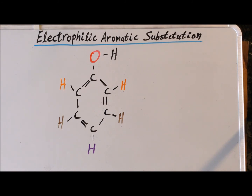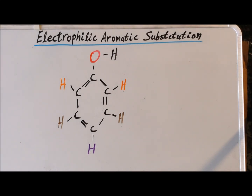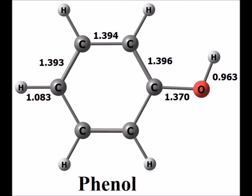Our third ring-activating substituent is the hydroxy group, OH. When added to a benzene ring, we call the resulting compound phenol. Please see the following figures, which show the computed structures for phenol and the various intermediates for the electrophilic aromatic substitution of the methyl carbocation for the various ring hydrogens of phenol.